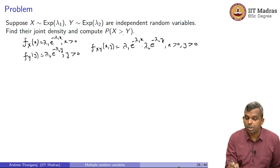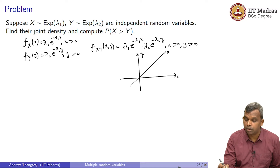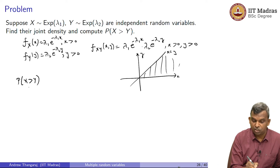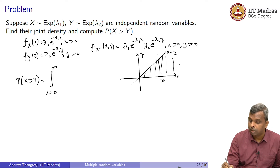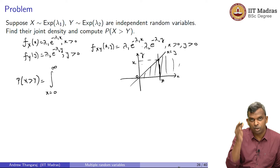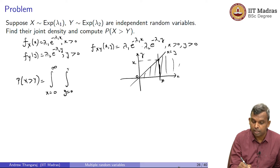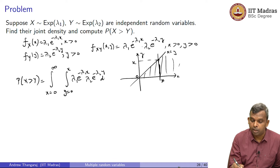The probability we want is P(X > Y). It helps to sketch the region: you have the line x = y, and you want the region where x > y. For x going from 0 to infinity, once you fix a particular value of x, y goes from 0 to x. So the integral is: from x = 0 to ∞, and y from 0 to x, of λ₁ e^(−λ₁x) · λ₂ e^(−λ₂y) dy dx.